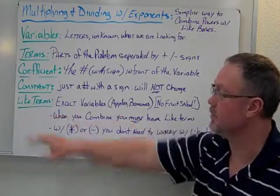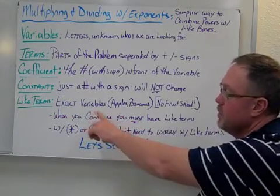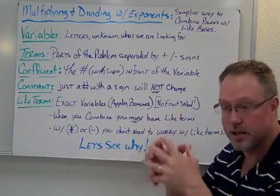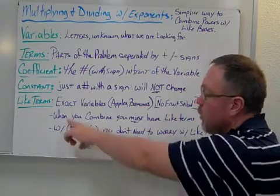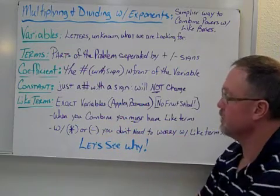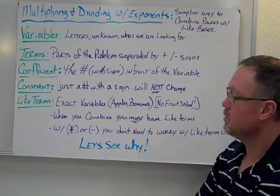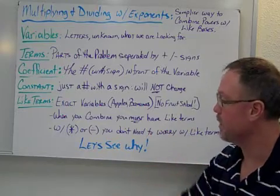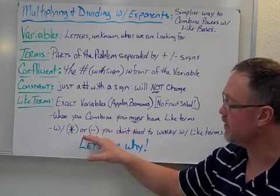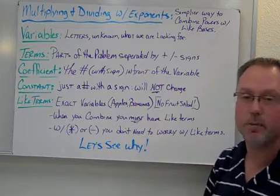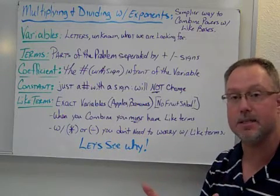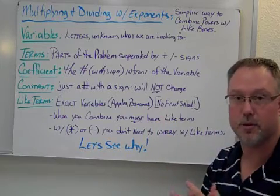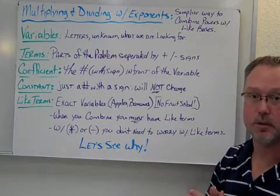And then our last one is like terms, exact variables. Think of apples and bananas. No fruit salad because you can't combine the two. When you combine, you must have like terms. So when you're combining terms, they must be exactly the same. With multiplication or division, you don't need to worry about like terms. It's like bases that you have to worry about. But the powers will be different, and that's fine.